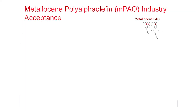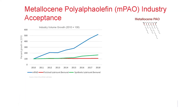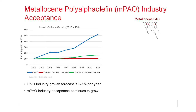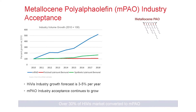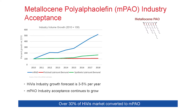Here, we focus on MPAO. The left-side graph shows the industrial volume growths for lubricants. The red line at the bottom was basically flat from 2010 to 2018. At the same time, synthetic lubricant demand has grown at a rate of 4% to 5% per year, and high-viscosity MPAO demand has grown even more. Over 30% of the high-viscosity conventional PAO, or CPAO, market has converted to MPAO.